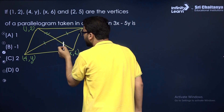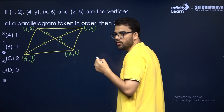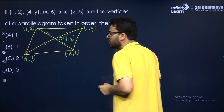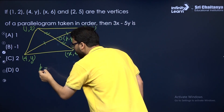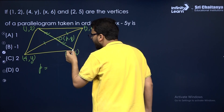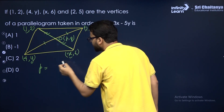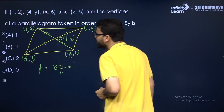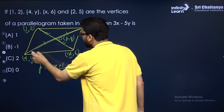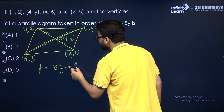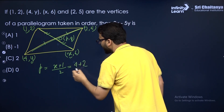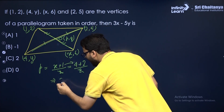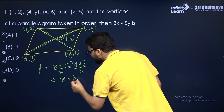The diagonals of a parallelogram bisect each other at the point of intersection. Suppose the point of intersection is O with coordinates (P, Q). Using the midpoint formula, P equals (x + 1)/2, and using the other diagonal, P also equals (4 + 2)/2. Setting these equal and simplifying gives x equal to 5.